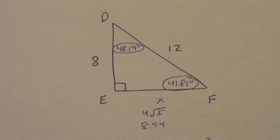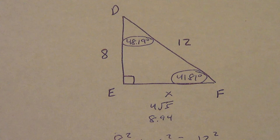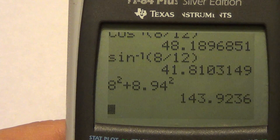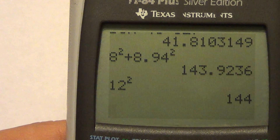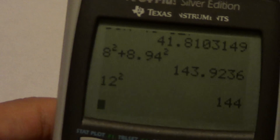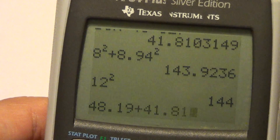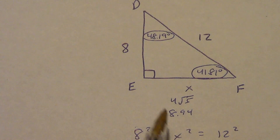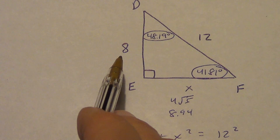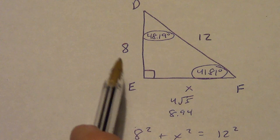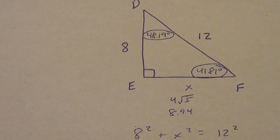Now for angle F: 8 is opposite and 12 is the hypotenuse — that's sine. So F equals inverse sine of 8 over 12. Typing that in: the measure of angle F equals 41.81 degrees. Three-way check: 8 squared plus 8.94 squared is really close to 12 squared — good. Then 48.19 plus 41.81 plus 90 equals exactly 180. And for the big/small check: biggest side 12 across from 90°, and since 8 and 8.94 are close, their angles 48.19° and 41.81° are also close. Everything makes sense.